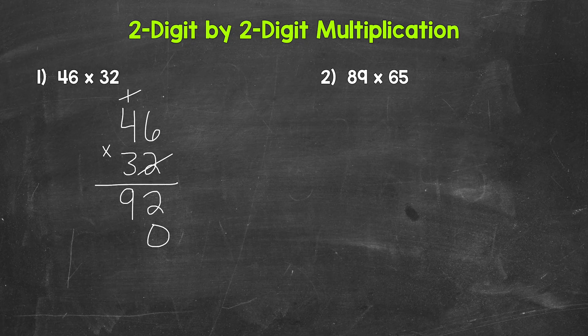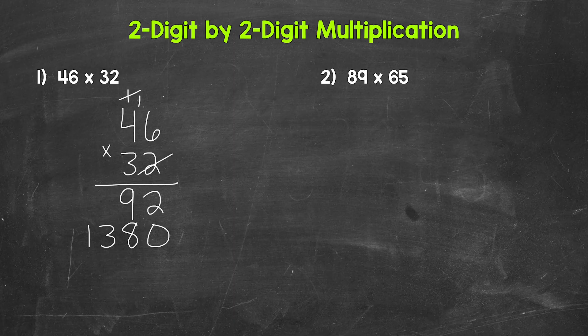Now we do three times six, which is 18. So we write our eight and carry the one. Now we have three times four, which is 12, plus that one is 13, so we write our three. And then there aren't any more places to the left, so that one comes straight down. So 46 times 30 gives us 1,380.